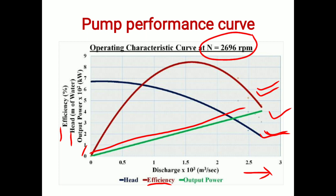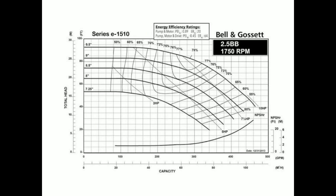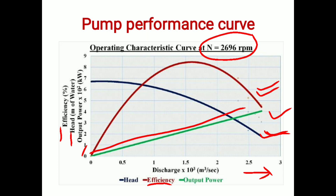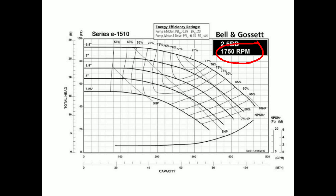Now we will see the family of curves. The previous single curve was plotted for a constant RPM and constant impeller diameter. The family curve is plotted for a constant RPM but for different impeller diameters — in the family curve the impeller diameter is not constant. In industry we will typically see a curve like this, and it is called a family curve.